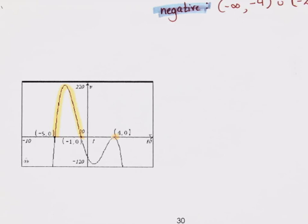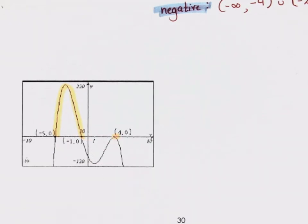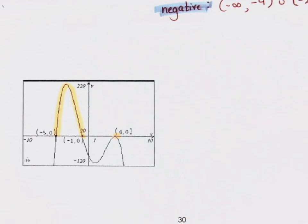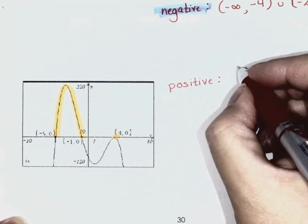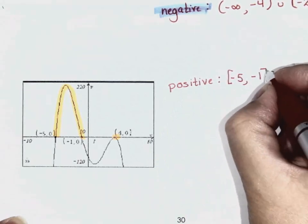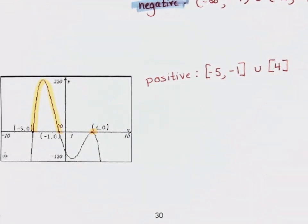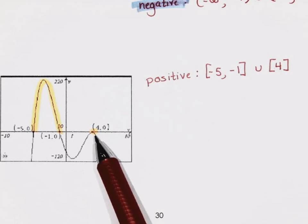We just had this conversation about zero being positive, so even though this part is positive I still have to include that singular point. For the positive interval, we've got negative 5 to negative 1 inclusive, in union with just that one singular point at, say, 4. Because zero classifies as positive — how many x-intercepts happened at this point? Technically two, because there's an upside-down bounce.